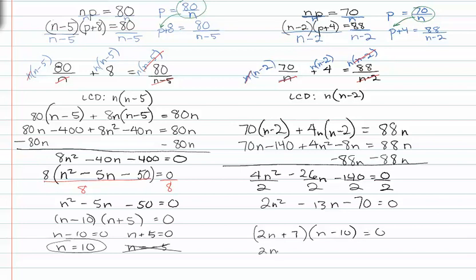so 2n plus 7 equals zero, and n minus 10 equals zero. So n is equal to negative seven halves, or n is equal to ten. This is negative, won't work, so this is my answer.